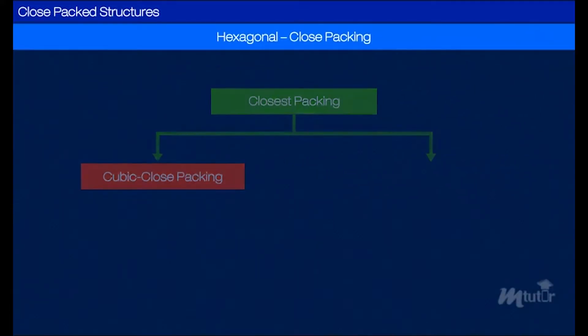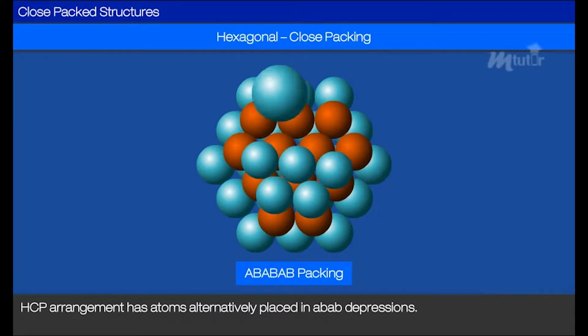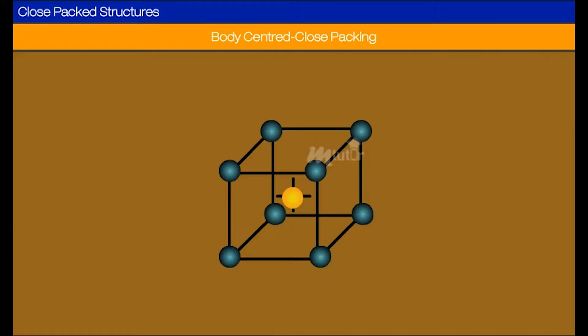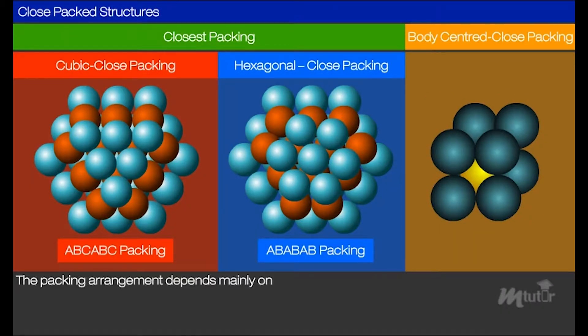Hexagonal close packing: this type of arrangement wherein atoms are alternately placed in A, B, A, B depressions is called hexagonal close packing or HCP arrangement. Apart from close-packed structures, we also have the body-centered cubic structure with a packing more open than that of close-packed structures. The packing arrangement depends mainly on two factors: the radii of the atoms and the type of bond.